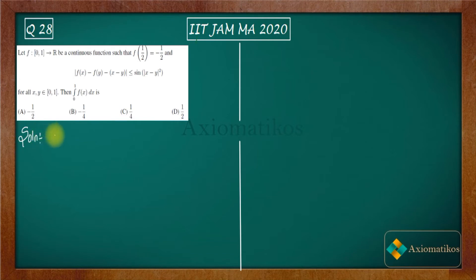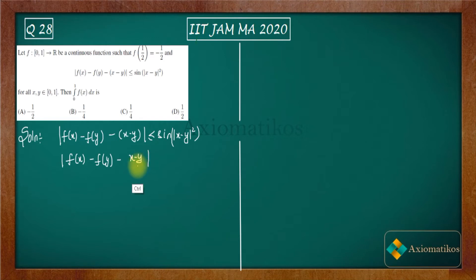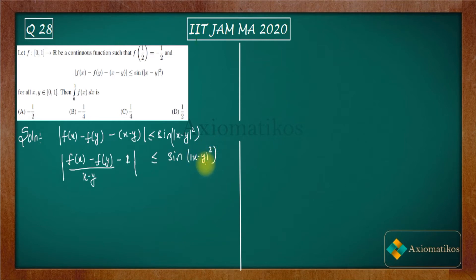We are given that |f(x) - f(y) - (x - y)| is less than sin(x - y)². Now I am dividing both sides by |x - y|. What you get on the left side is |f(x) - f(y) / (x - y) - 1|, and on the right hand side you get sin(|x - y|²) / |x - y|.